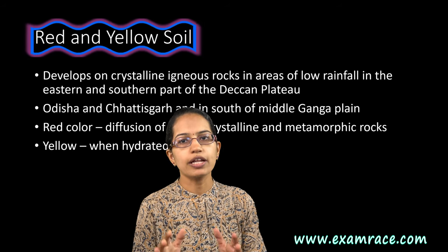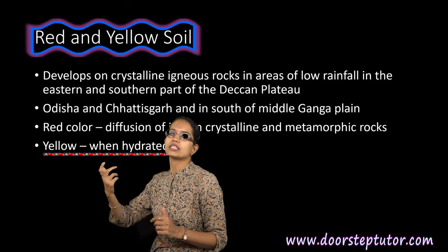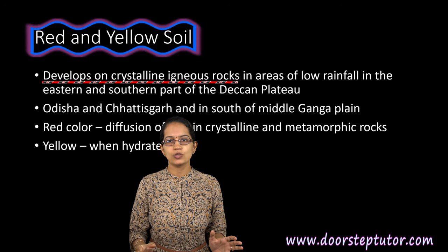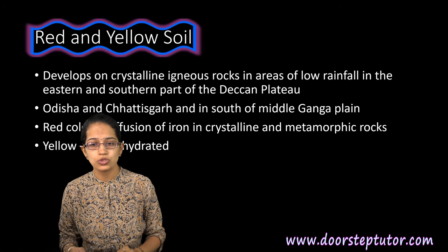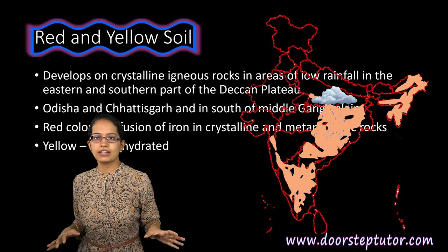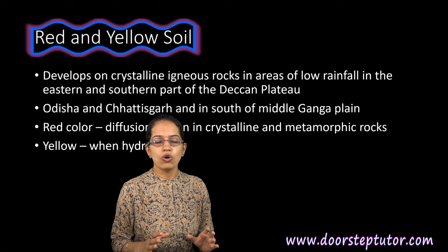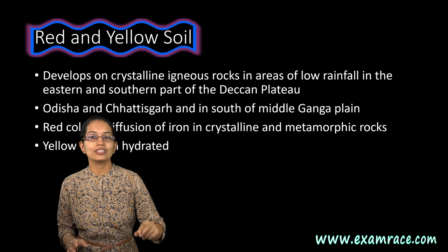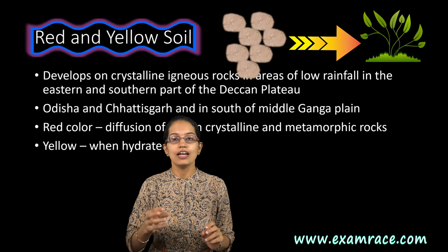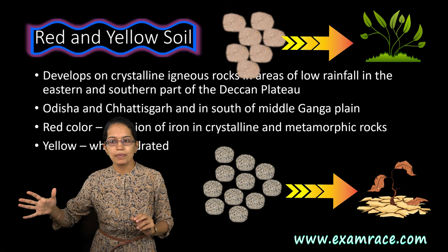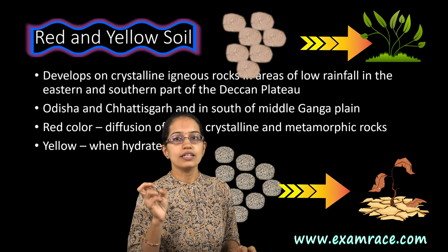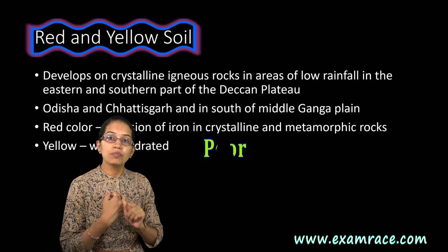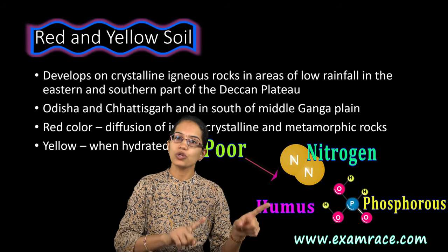The next soil is red and yellow soil. Red color is due to iron diffusion; yellow color occurs when it is hydrated. This soil depends mainly on the rock structure — if the rock is crystalline igneous rock, you would have red and yellow soil. It is usually seen in areas with less rainfall in parts of the Deccan Plateau on the south and eastern sides. In the Western Ghats area, it is mainly red loamy. If the particles are very fine and small, it is fertile; if coarse, it is found in dry upland areas and is not fertile. Red and yellow soil is also poor in nitrogen, phosphorus, and humus.